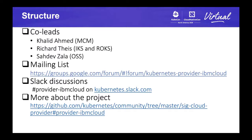On the structure of the project, we have three leads. Khalid Ahmed is from the IBM Multi Cloud Manager side. We have Richard Thies, one of the speakers here today, representing IBM Cloud Kubernetes Service and Red Hat OpenShift Kubernetes Service. And I represent more from the open source software side. You can find useful links here, including a mailing list — I highly recommend joining it to get updates — and a Slack channel for provider IBM Cloud. Project documentation is available on the GitHub link provided.